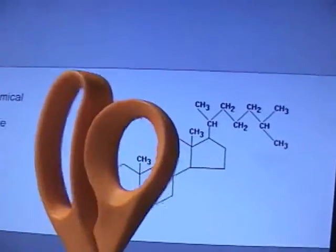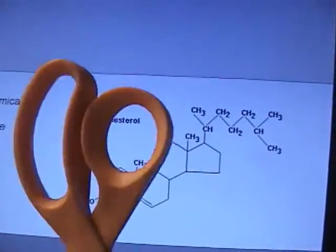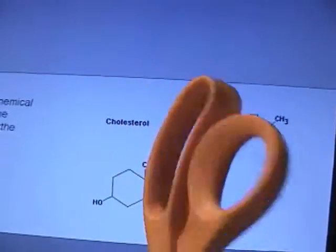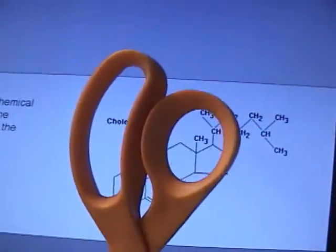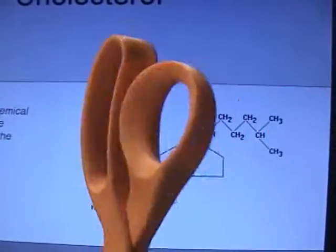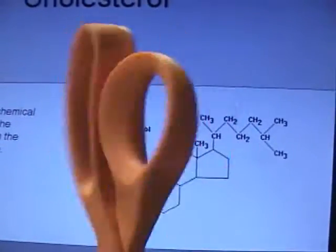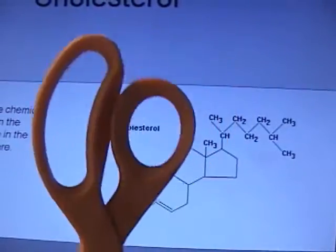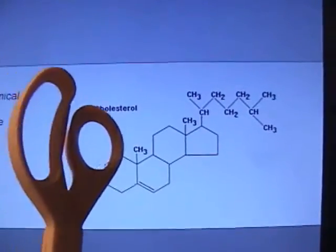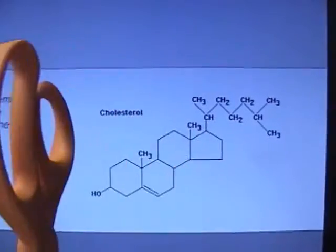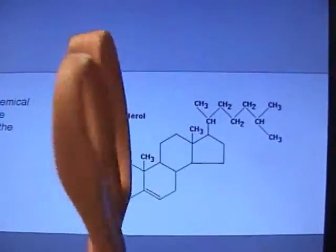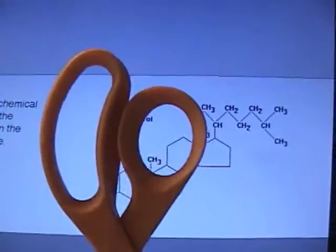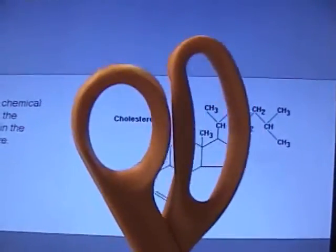This bad boy right here is cholesterol. Cholesterol comes in two forms: one called HDL and one called LDL. The HDL one is the one that's not so bad for you. LDLs are the ones that really mess you up and cause the hardening of the arteries in your heart — that's bad news. This is a very funky-looking chemical, but it's cool because cholesterol has a cool shape. So cholesterol comes in two forms: HDL and LDL.